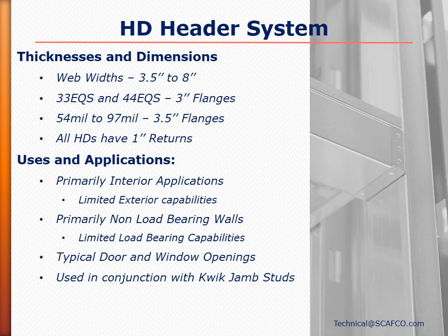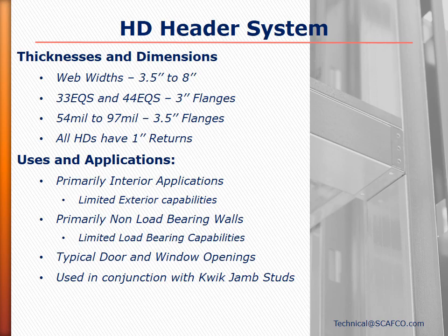The HD headers come in standard wall widths from 3.5 inches up to 8 inches. Thicknesses include 33, 43, 54, 68, and 97 mil — no other thicknesses are available. Standard flanges are 3 inches and 3.5 inches. The HD headers are primarily used for interior applications, as the flush mount and crippler clips are designed to give the wall around the door or window opening as smooth a finish as possible. They are primarily used in interior non-load bearing walls in repeated openings such as offices, schools, and similar facilities.